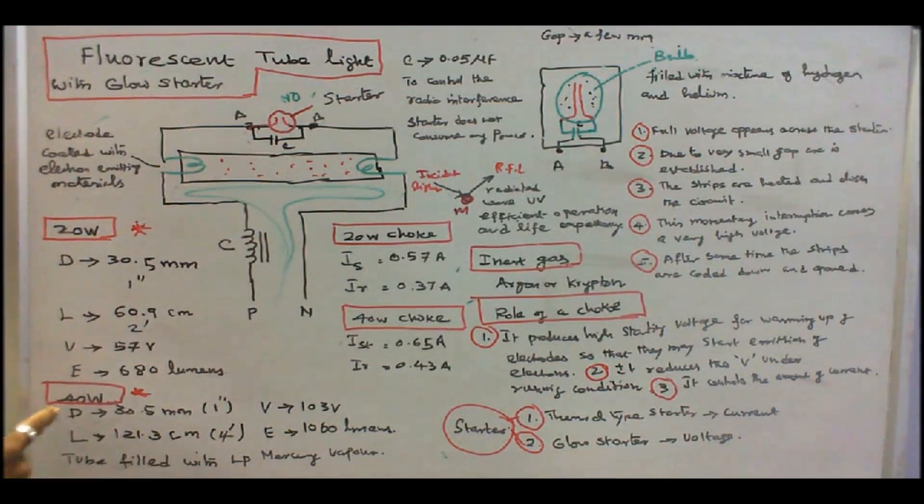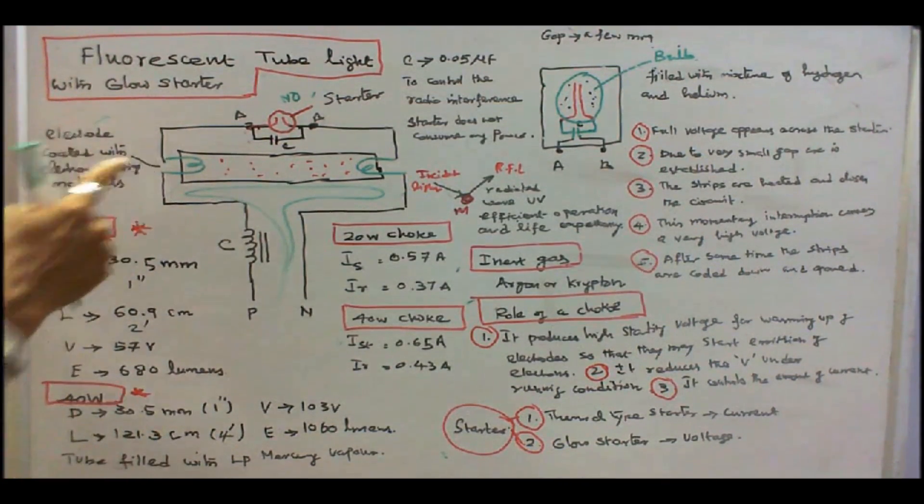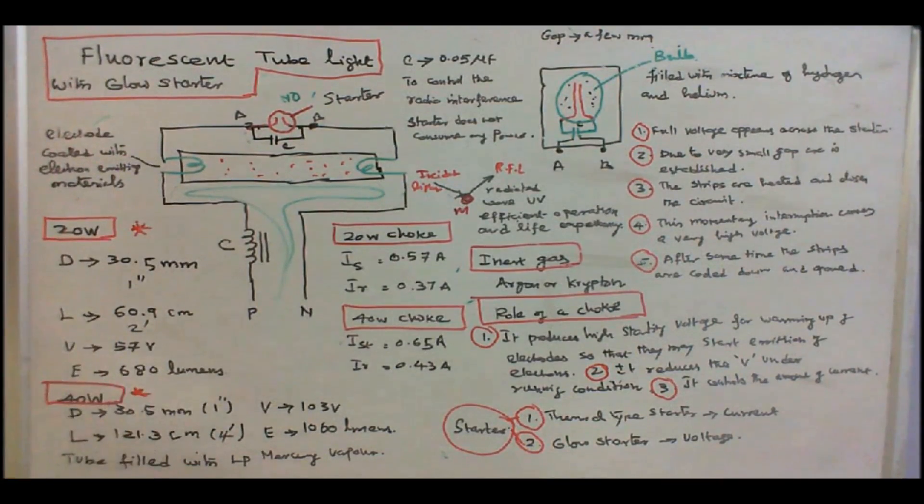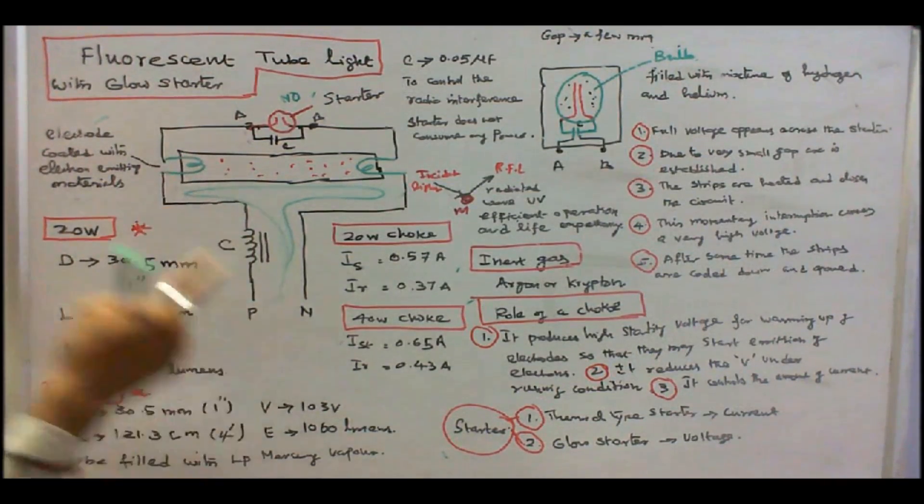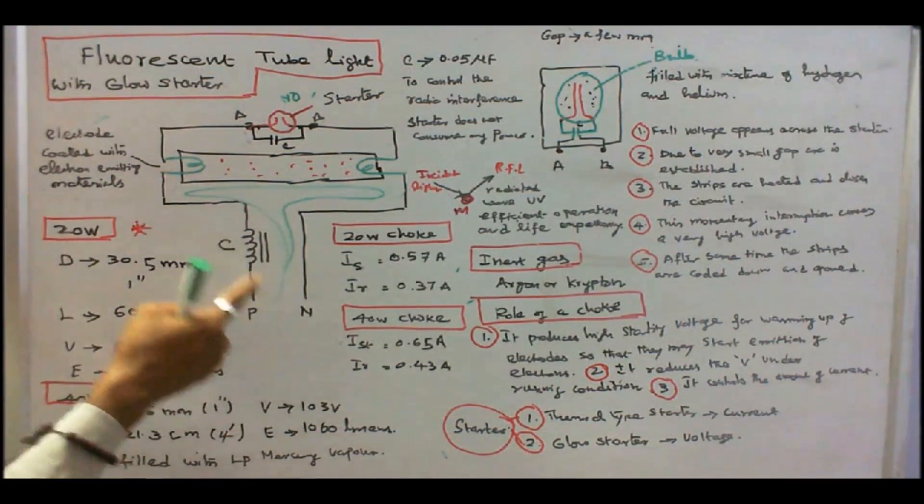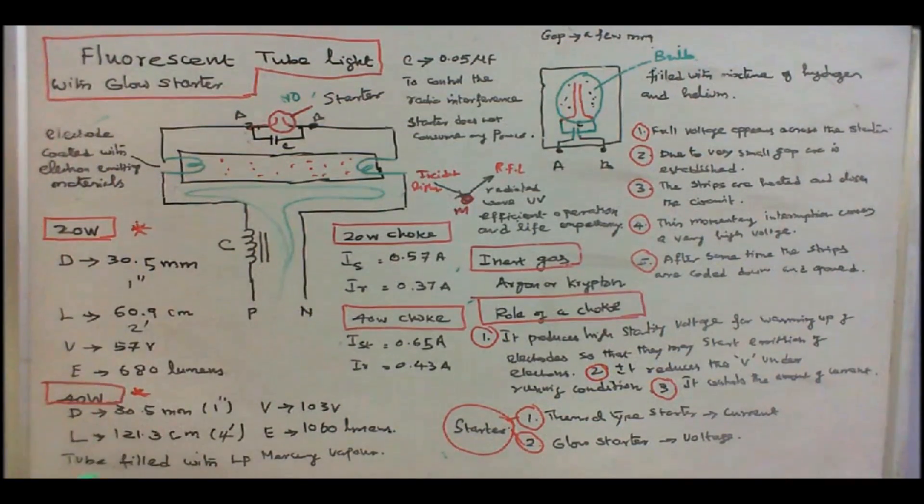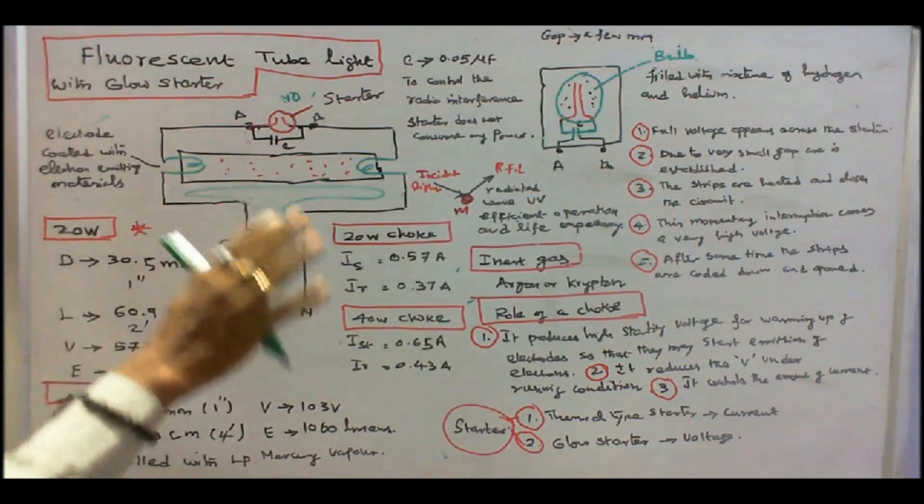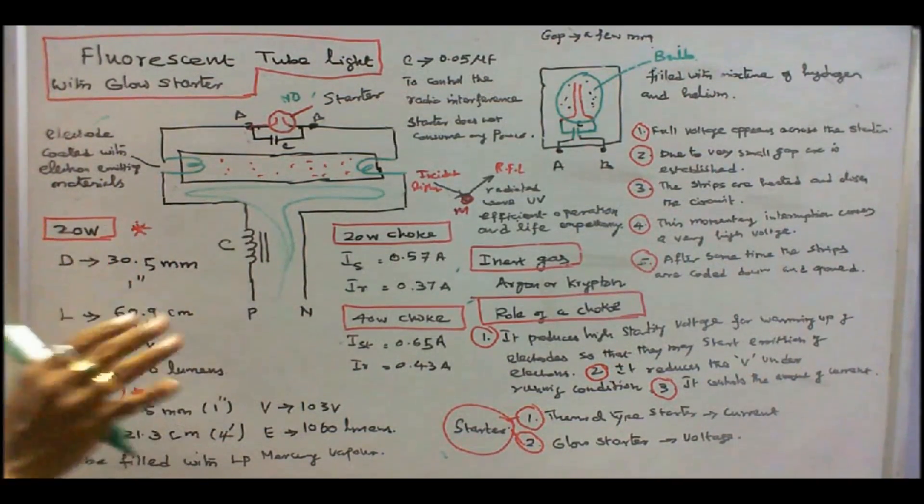The second is 40 watt tube light. The diameter is same, 30.5 mm. The length is 121.3 cm or 4 feet. The operating voltage is 103 volts. We are applying 230, even though under operating condition, 103 is enough. Lumen output is 1060 lumens. This is the operation of a fluorescent tube light.